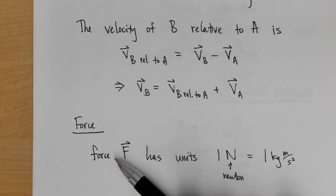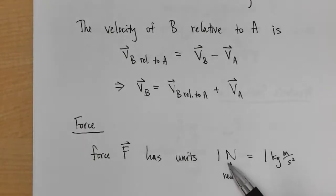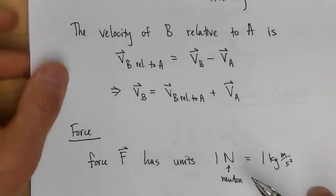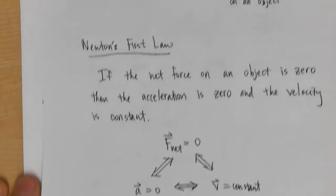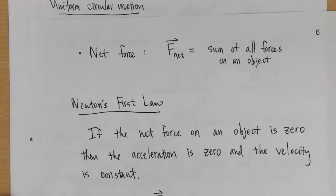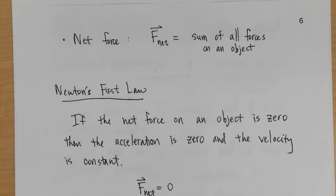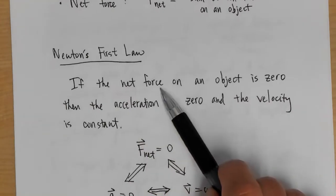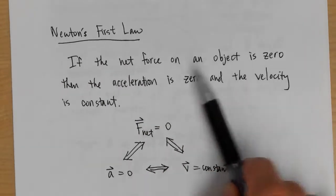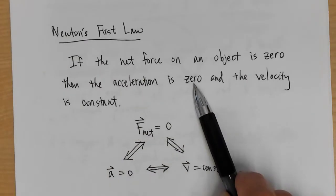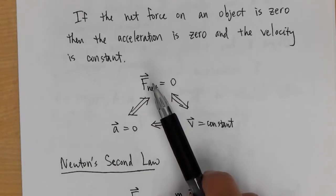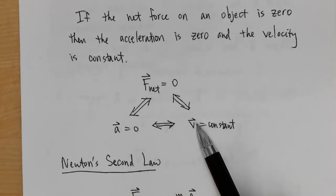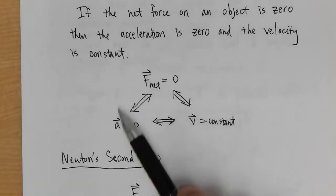Next we talked about forces. Force F has units of newtons; one newton is one kilogram·meter per second squared. The net force is the sum of all forces on an object. Newton's first law: if the net force is zero, then acceleration is zero and velocity is constant.